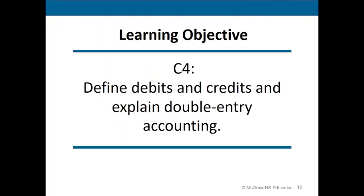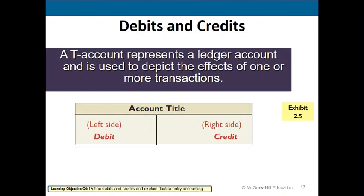Let's talk about debits and credits and double entry accounting. We use what are called T-accounts in accounting. These T-accounts represent a ledger account and are used to depict the effects of one or more transactions. Each account has three characteristics: the account title at the top, the left side called the debit side, and the right side called the credit side.